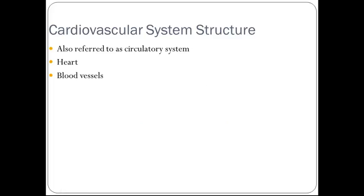Cardiovascular system structure, also referred to as the circulatory system, consists of the heart and the blood vessels that go with it.